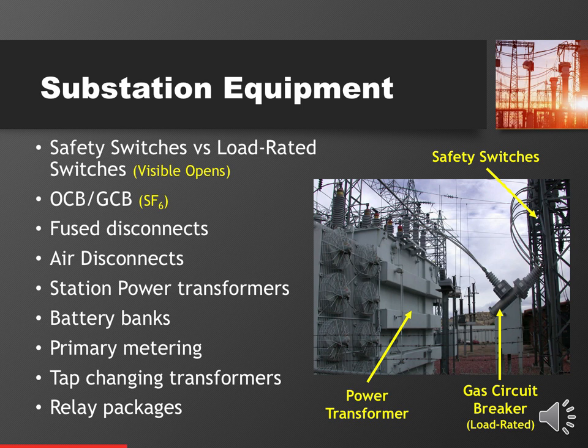Next: oil circuit breakers versus gas circuit breakers. The key thing to understand is how to inspect them to make sure they'll function. With an oil circuit breaker, you live and die with having enough clean oil in the system. With a gas circuit breaker like the one in the picture, you live and die with gas pressure — you need enough SF6 or sulfur hexafluoride gas at appropriate pressure. That's important from an inspection standpoint, which has safety implications.